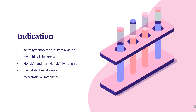What is doxorubicin used for? Doxorubicin is indicated for the treatment of neoplastic conditions like acute lymphoblastic leukemia, acute myeloblastic leukemia, Hodgkin and non-Hodgkin lymphoma, metastatic breast cancer, metastatic Wilms tumor, metastatic neuroblastoma, metastatic soft tissue and bone sarcomas, metastatic ovarian carcinoma, metastatic transitional cell bladder carcinoma, metastatic thyroid carcinoma, metastatic gastric carcinoma, and metastatic bronchogenic carcinoma. Doxorubicin is also indicated for use as a component of adjuvant therapy in women with evidence of axillary lymph node involvement following resection of primary breast cancer.